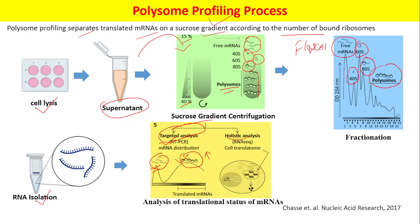We can also perform holistic analysis — looking at the whole cellular transcriptome. For that purpose, we can use RNA sequencing, which gives us the whole translatome. By performing RNA sequencing on RNA isolated from all fractions — free mRNAs, 40S ribosome-associated mRNAs, and polysome mRNAs — we get an idea of how much total mRNA is being translated or not. More mRNA in the polysome-associated fraction clearly means that more of the mRNA is being translated.